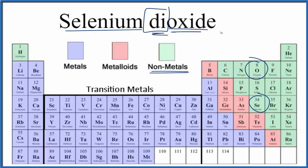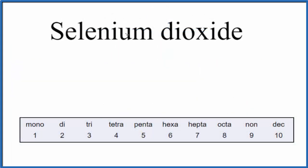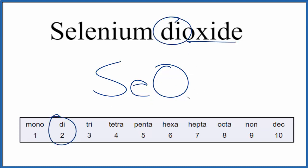The element symbol for selenium is Se, and oxide is from oxygen, that's O. We don't have anything written in front of selenium, so we assume that's just going to be one and we just don't write the one. But the oxide, that oxygen there, that di means two, so we're going to put a two after the O.